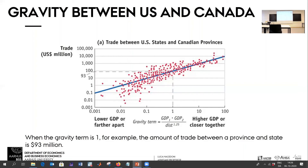In any case, what is surprising about this? Well, when the product of the GDPs divided by the distance to the 1.25 is equal to 1, the level of trade is 93 million. Let's pick that point — it doesn't really matter, just to pick one there.